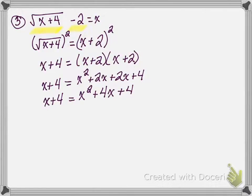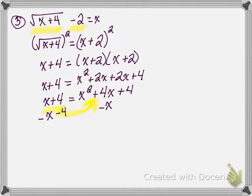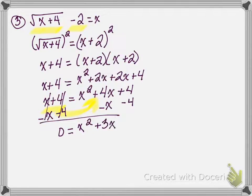Because it is raised to a power of 2, we have x squared, which means it is a quadratic. Any time we have a quadratic, we have to get it into standard form by making it equal to 0. So I am going to subtract x from both sides and subtract 4 from both sides, leaving 0 on the left side.